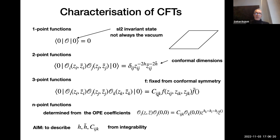This three-point coupling is exactly the same quantity which appears in the operator product expansion. In CFTs you can bring two operators close to each other and express the result in terms of local operators; the expansion coefficients are exactly these three-point functions. So if you know the three-point functions and the conformal dimensions, you can in principle describe all correlation functions in a CFT. The conformal field theory is characterized by these two quantities, and we would like to calculate them from integrability.